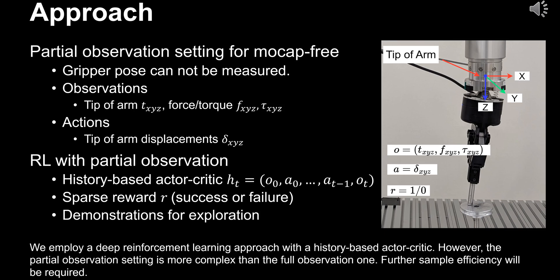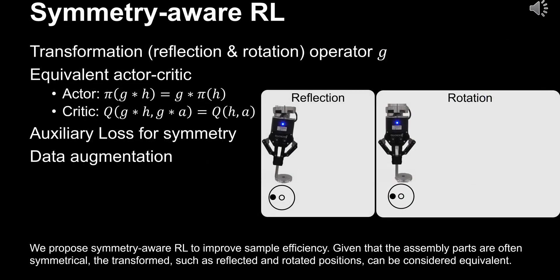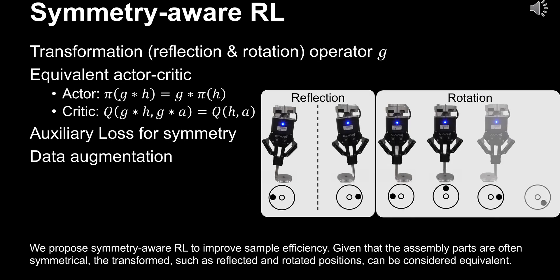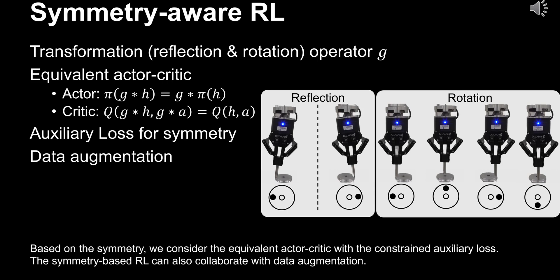However, the partial observation setting is more complex than the full observation one, and further sample efficiency will be required. We propose symmetry-aware RL to improve sample efficiency. Given that the assembly parts are often symmetrical, transformed positions — such as reflected and rotated ones — can be considered equivalent. Based on the symmetry, we consider the equivalent actor-critic with a constrained auxiliary loss. The symmetry-based RL can also collaborate with data augmentation.